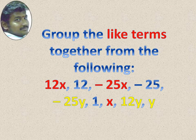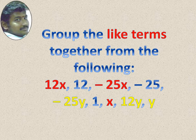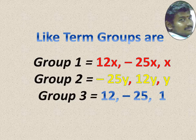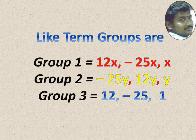Group the like terms together from the following: 12x, 12, minus 25x, minus 25, minus 25y, 1, x, 12y, y. There are 9 terms. Group 1: 12x, minus 25x, and x — all like terms. Group 2: minus 25y, 12y, y — all y, one group. 12, minus 25, 1 — all constants, one group. Each group is called like terms.